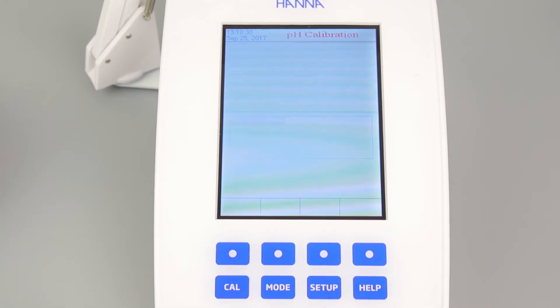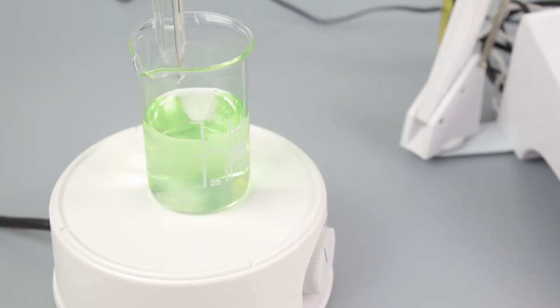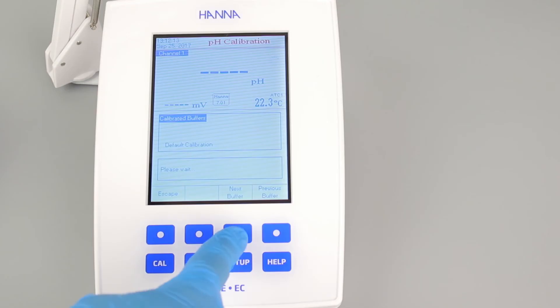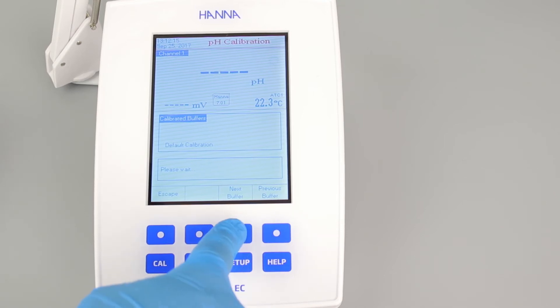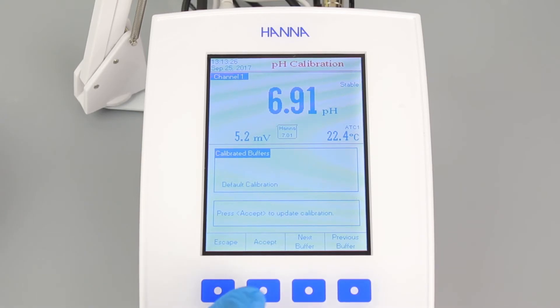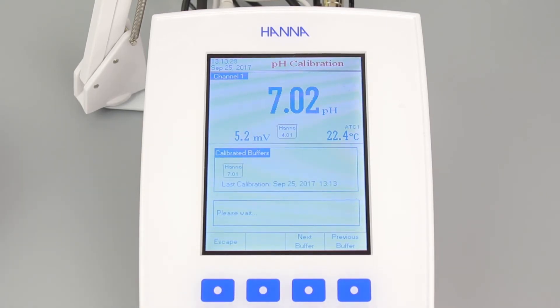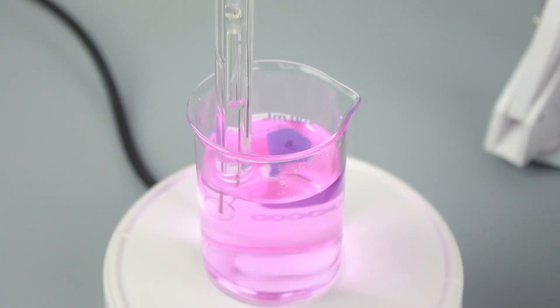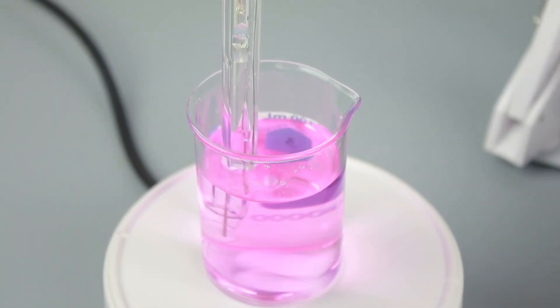Calibration is an important step to ensure your meter is operating at its best. We recommend calibrating before each use. We'll start with pH calibration. To calibrate your meter, press the CAL button. Then place the pH electrode into your buffer. Make sure the sample is stirring. Use the next buffer and previous buffer buttons to match the value you're using. Once stable, press accept and the calibration will be saved. Your meter can calibrate up to five points. Place the electrode in your next buffer or hit ESC when you have finished calibrations.